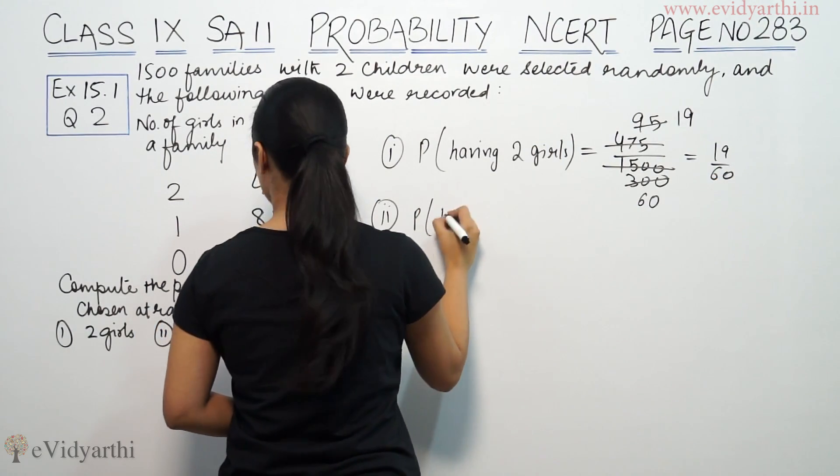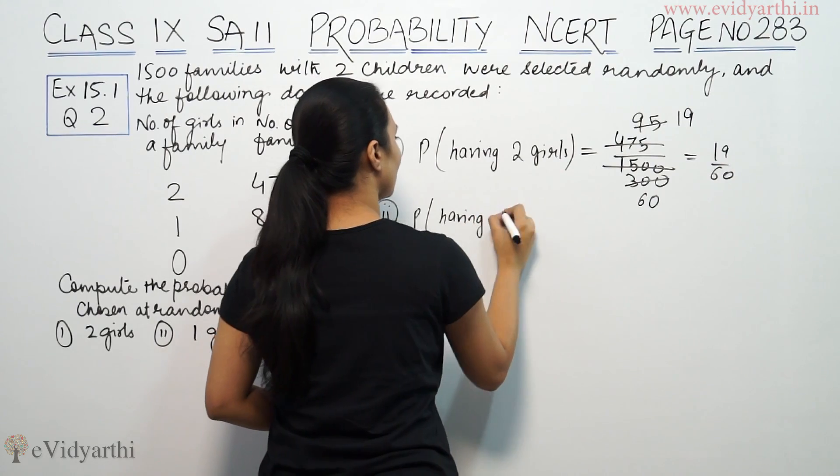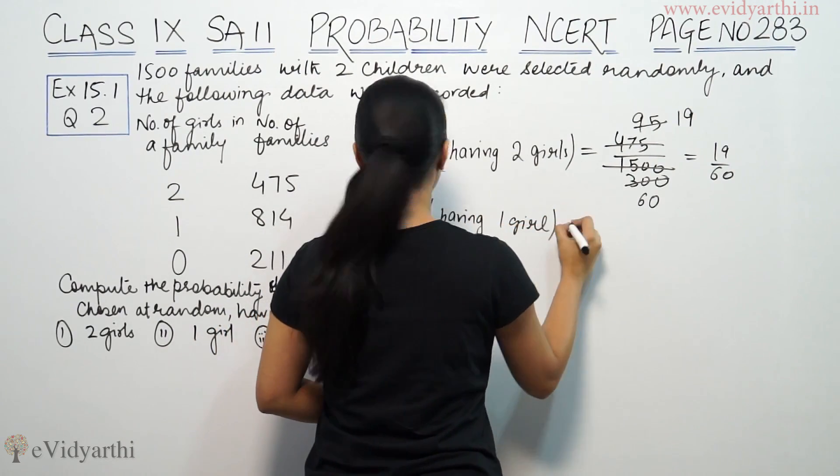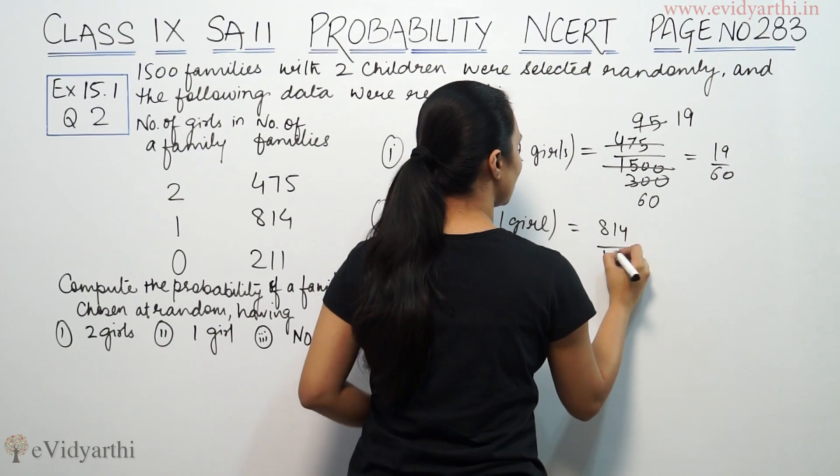The second part is probability of having 1 girl. 1 girl is 814 by 1500.